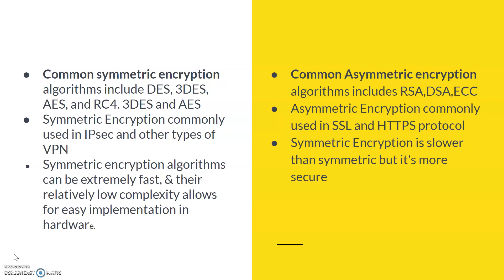Symmetric key algorithms can be extremely fast compared to asymmetric key and have relatively low complexity because the key size is small. Asymmetric key encryption takes more time comparatively because the key size is much larger — typically 2048, 4096 bits or more. Asymmetric key is more secure compared to symmetric key.